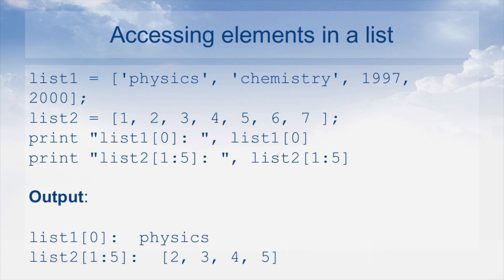Similar to string indices, list indices also start at 0, and lists can be sliced, concatenated, and so forth. To access values in a list, use square brackets for slicing along with the index or indices to obtain the value available at that index. For example, we can see how elements are accessed from different lists.